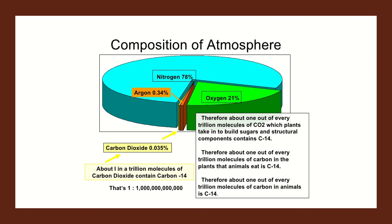For the second factor, it would be necessary to estimate the overall amount of carbon-14 and compare this against all other isotopes of carbon. Based on Korf's estimation that just two neutrons were produced per second per square centimeter of Earth's surface, each forming a carbon-14 atom, Libby calculated just one carbon-14 atom per every 10 to the 12 carbon atoms on Earth. In other words, about one in a trillion molecules of carbon dioxide contains carbon-14. Therefore, about one out of every trillion molecules of CO₂ which plants take in to build sugars and structural components contains carbon-14, and this ratio will propagate all the way through plants and animals.